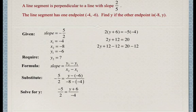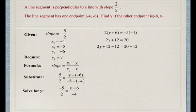Now we solve for y by subtracting 12 from both sides. When we subtract 12 from both sides, it simplifies to be 2y equals 8. We divide both sides by 2, so we get y equals 4. That means the other endpoint is negative 8, 4.